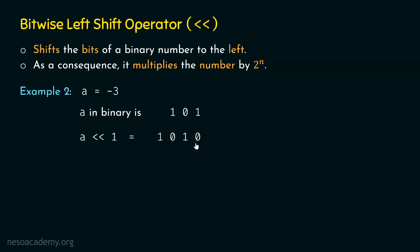The vacant place is always filled by 0. After shifting, we get 1010. The place value of the leading bit is minus 2 to the power 3, which is minus 8, and the next set bit has place value 2. Minus 8 plus 2 is minus 6. So the decimal equivalent is minus 6. Replacing n by 1 gives 2, and minus 3 multiplied by 2 is indeed minus 6.